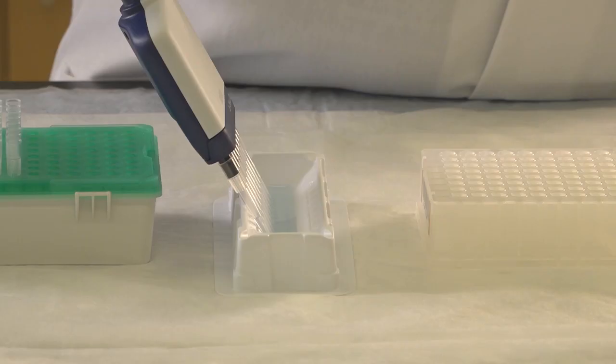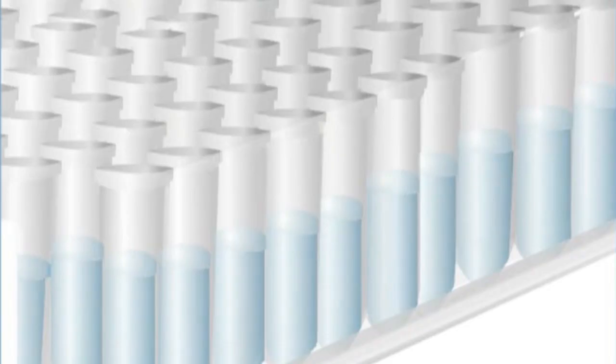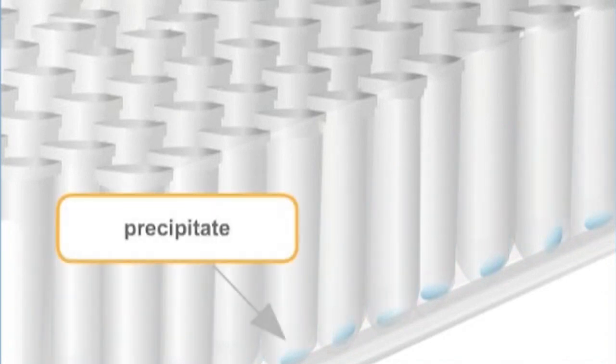Before hybridizing the DNA sample to an array, the sample is purified by isopropanol precipitation. First, the blue precipitation reagent is added to each sample. Then, the DNA is collected by centrifugation and the supernatant is removed.